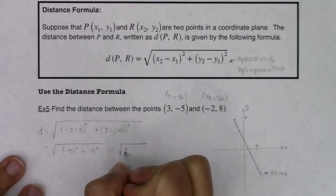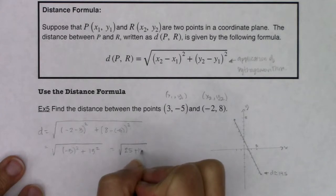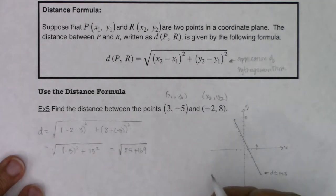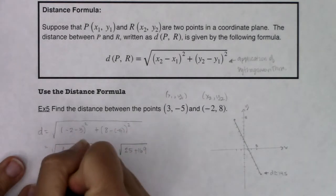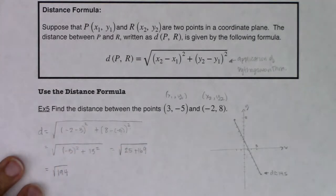This turns into the square root of 25 plus 169. And when I add those two numbers together, I get the square root of 194. Alright, now I thought it would be around 14 and a half.